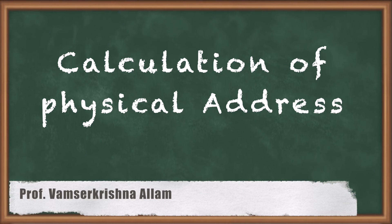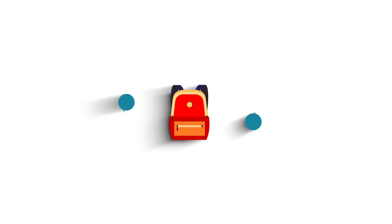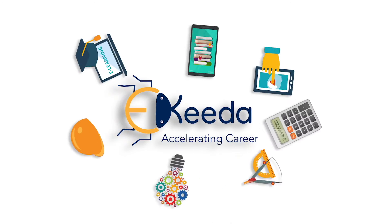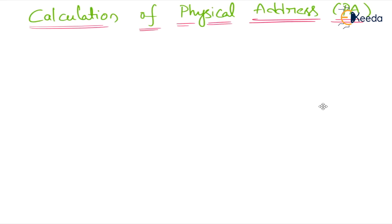Hi students, today we will discuss the calculation of physical address. In the last class I clearly explained the bus interface unit. What is the main function of the bus interface unit? The main function of the bus interface unit is fetching the instruction from memory. This class we will go about how we can calculate the physical address.